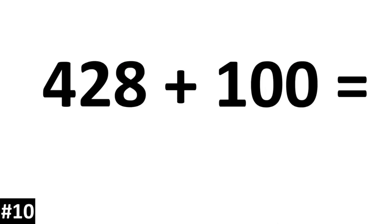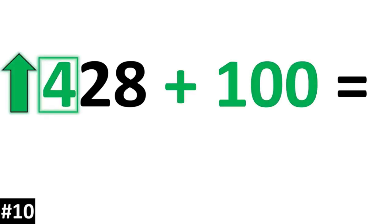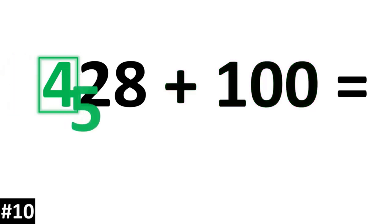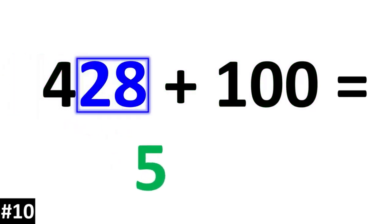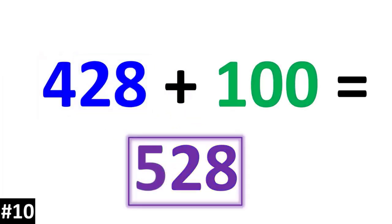428 plus 100. 428 has a 4 as the hundreds digit. So if we add by 100, that 4 is going to become a 5. The other numbers stay the same, and we have 528.